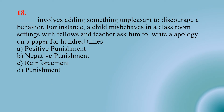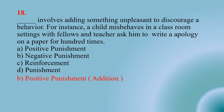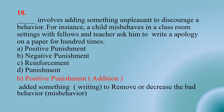Number eighteen: It involves adding something unpleasant to discourage behavior. For instance, a child misbehaves in a classroom and the teacher asks him to write an apology hundreds of times — Option A: positive punishment; Option B: negative punishment; Option C: reinforcement; Option D: punishment. The right option is A — positive punishment. Something unpleasant is added to remove the bad behavior. In both positive punishment and positive reinforcement, something is added to get the desired response.